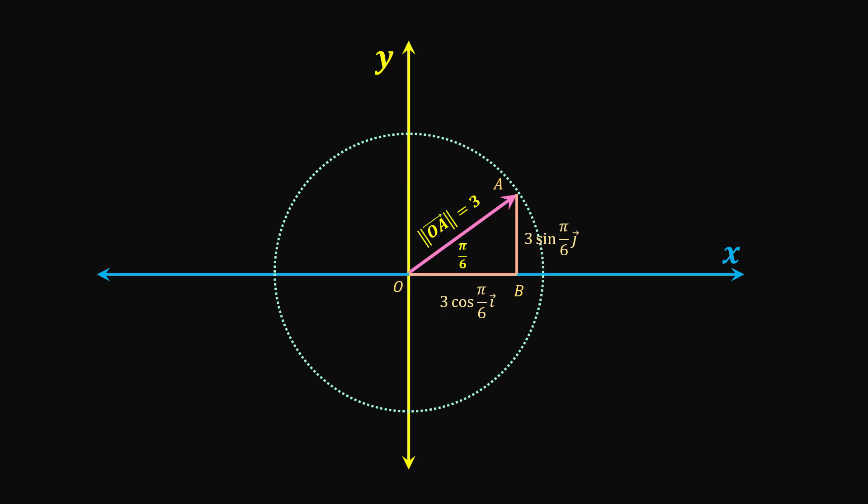This implies vector OA equals 3 times cosine of π/6 times I plus 3 times sine of π/6 times J, which is equal to 3√3/2 times I plus 3/2 times J, because cosine of π/6 equals √3/2 and sine of π/6 equals 1/2.